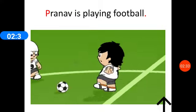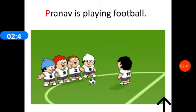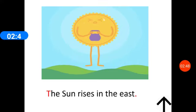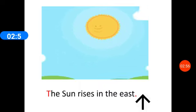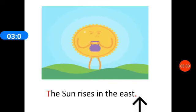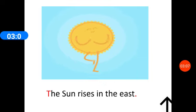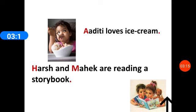Pranav is playing football. This group of words is arranged correctly and so is well understood. The sun rises in the east. This is a correct and meaningful sentence. A sentence begins with a capital letter and ends with a full stop. We have already learnt the use of capital letter and full stop in a sentence. Aditi loves ice cream. Harsh and Mehak are reading a story book. These sentences are meaningful and so easy to understand.